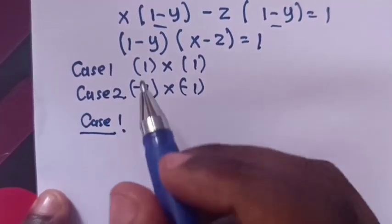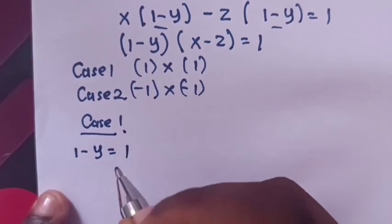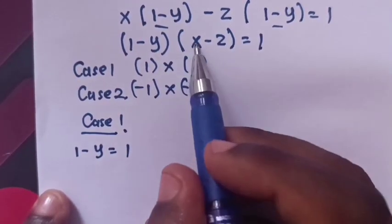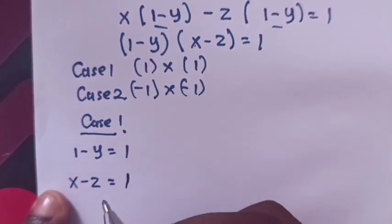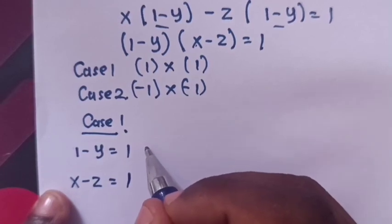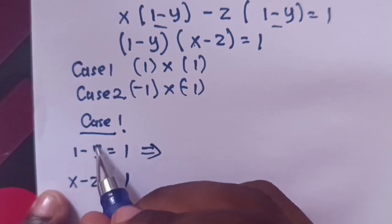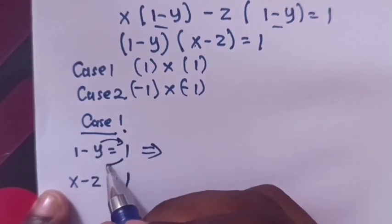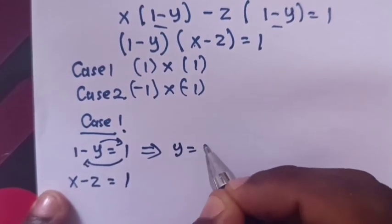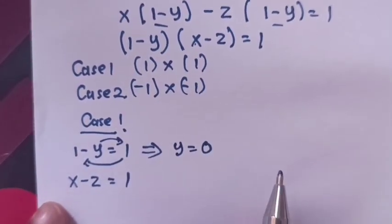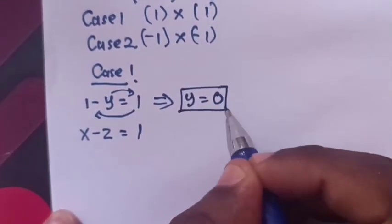In Case 1: (1 - y) = 1 and (x - z) = 1. To find y: rearranging gives y = 1 - 1 = 0. So the value of y is 0, which is an integer.